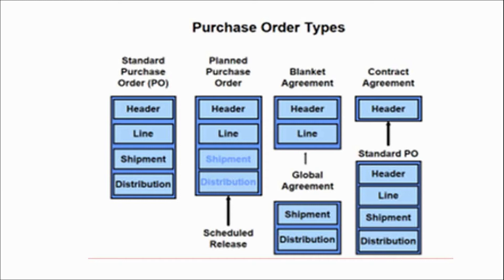In the planned purchase order, everything is clear except the delivery schedule, which is tentative. The need-by date which we put in the purchase order is tentative in nature and may change. In a blanket purchase agreement, as the name implies, it is an agreement — meaning we have an agreement with the supplier for the long term.